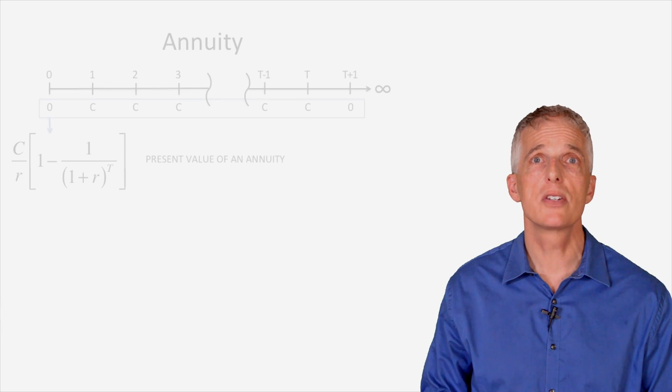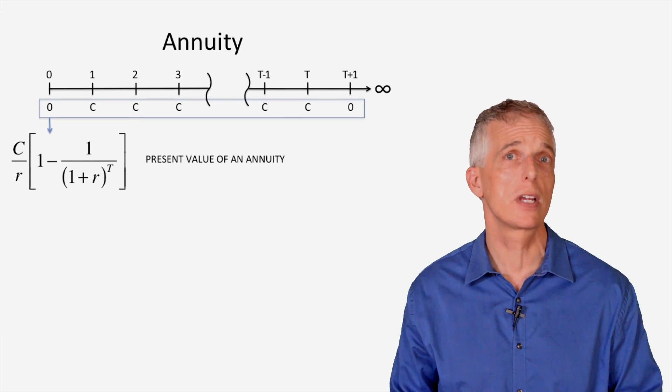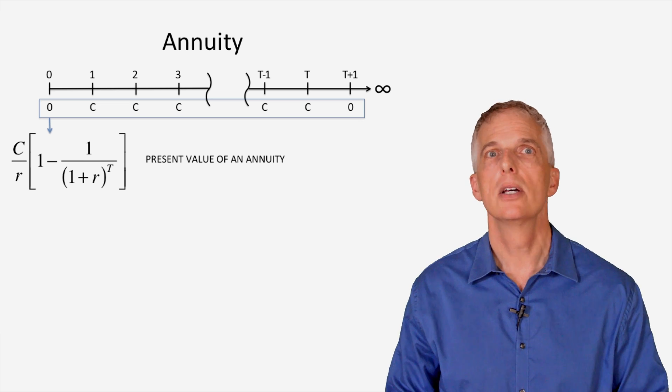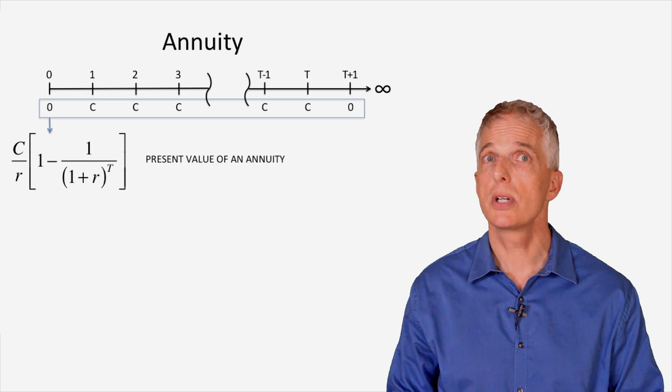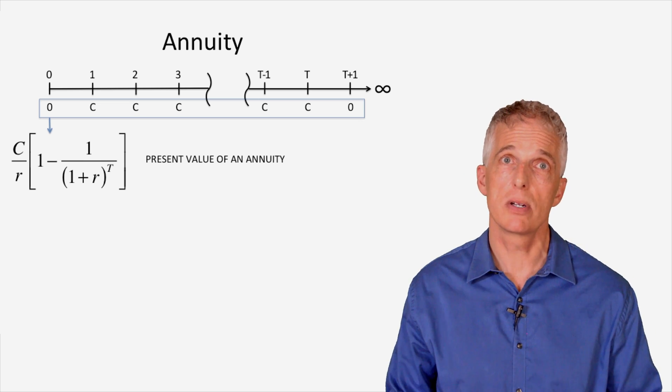A fixed annuity provides a promised cash flow, C, for a fixed number of periods, T. Note that the cash flow begins in period 1 and stops in period T.